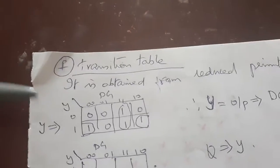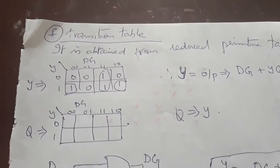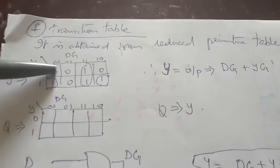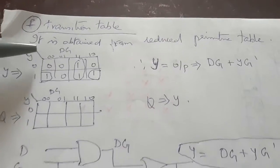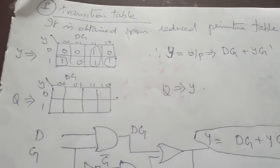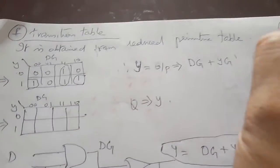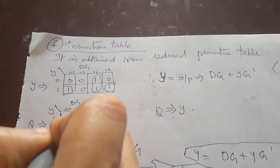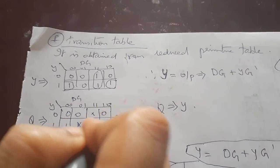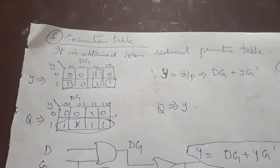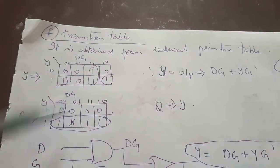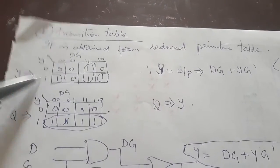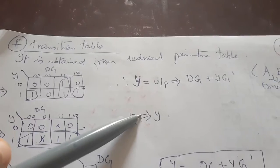After obtaining the reduced flow table, we proceed to the transition table. The transition table replaces state variables A and B with their binary values. Two tables are obtained: one K-map with A and B as binary variables for the next-state, and one table representing the output. Combine the K-map groupings to write down the synthesized equation or state equation.